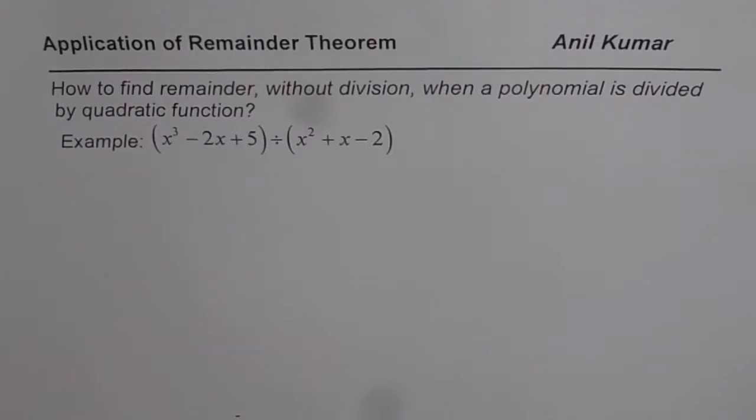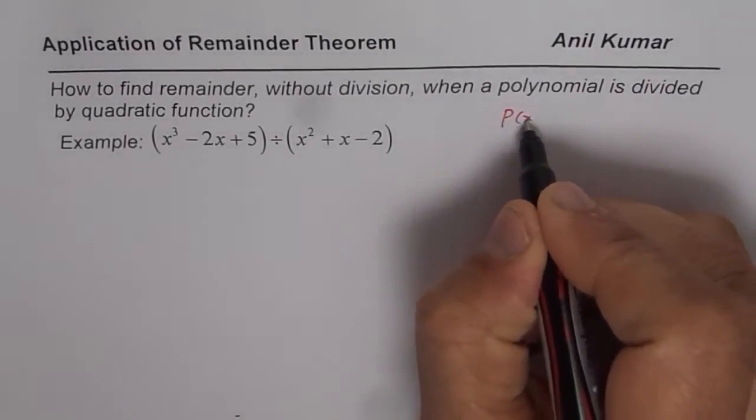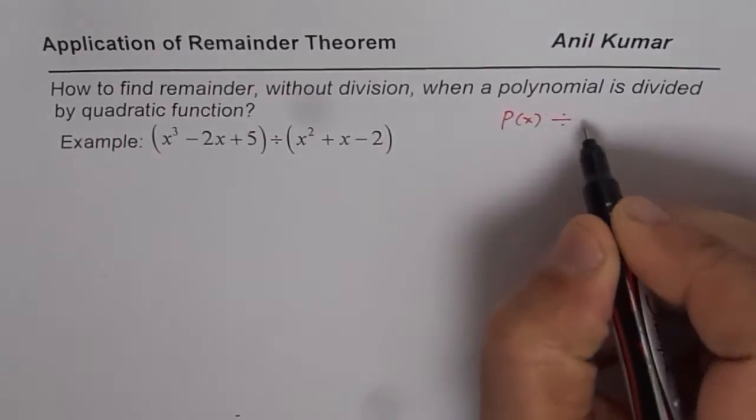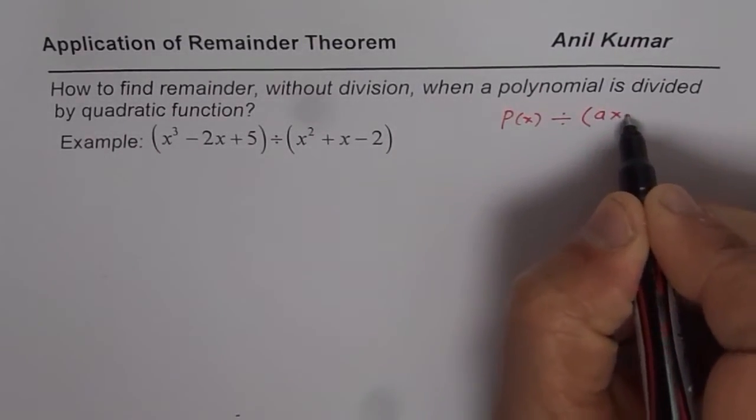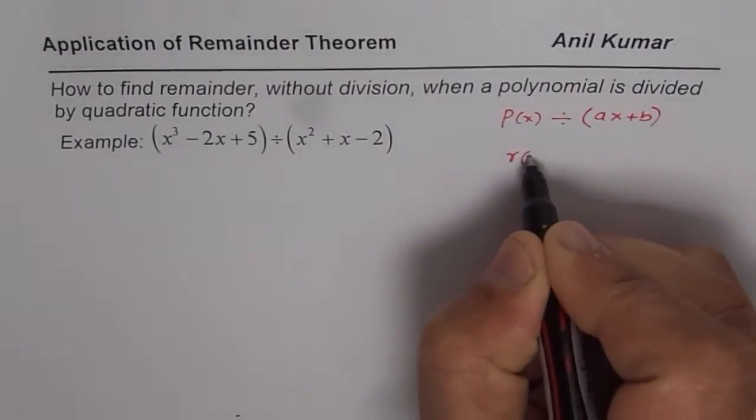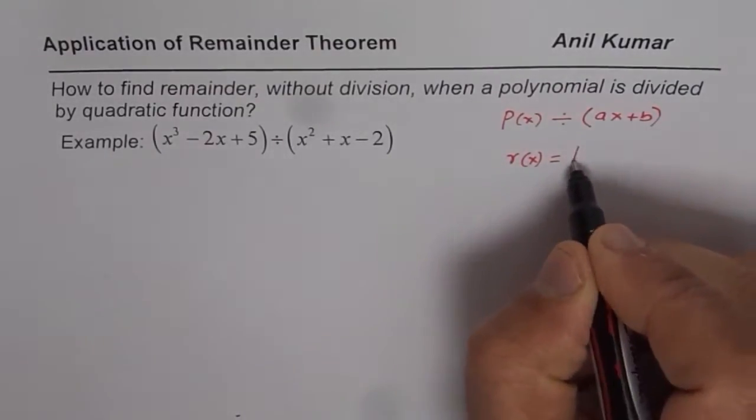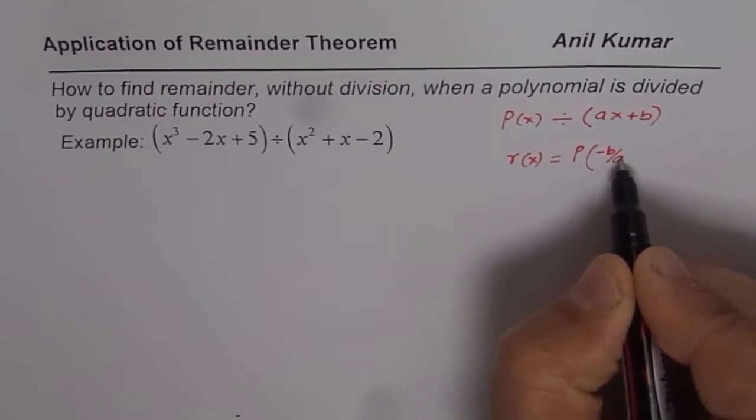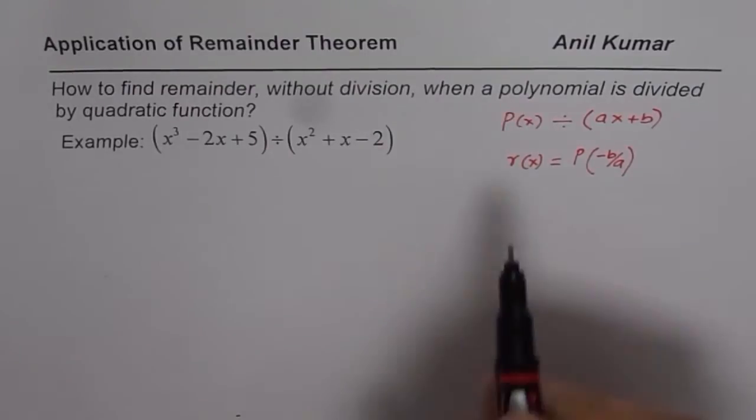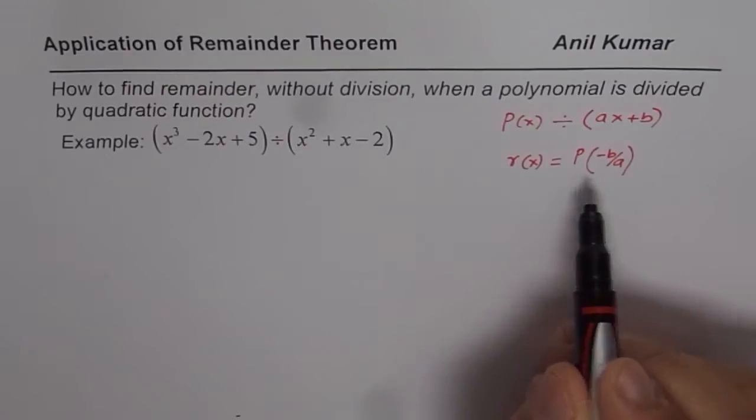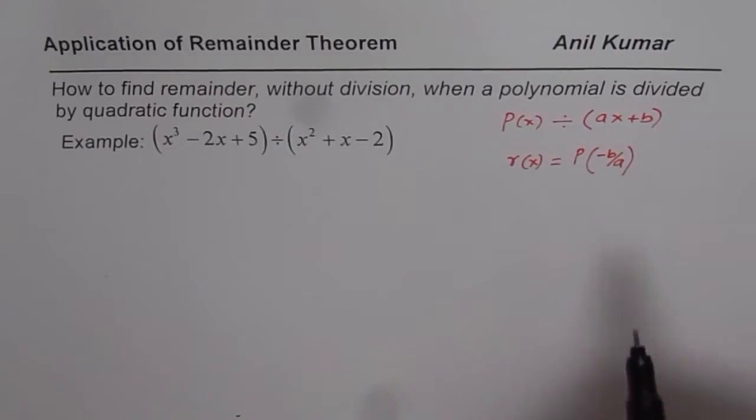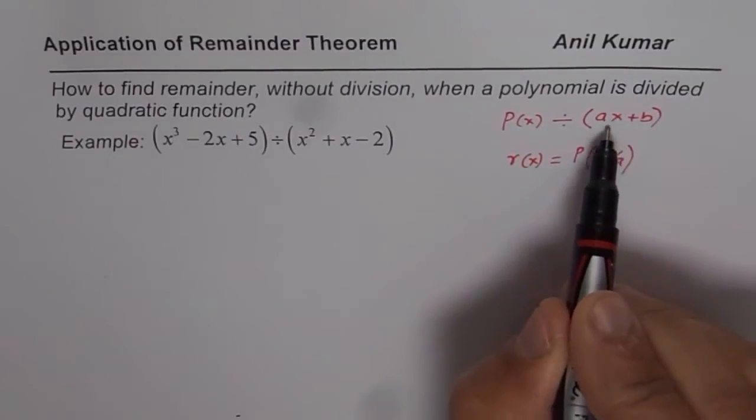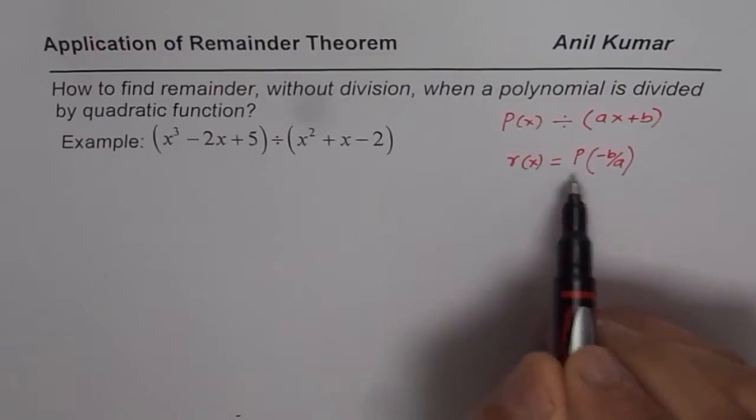She wants to understand how to find the remainder of a polynomial when it is divided by a quadratic function. What we have learned so far is that if we have a polynomial P(x) divided by a binomial, let's say AX plus B, then the remainder R(x) equals the value of the polynomial for X equals minus B by A. That's how you can find the remainder without doing long division by substituting the value of X as minus B by A.